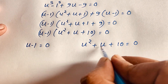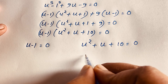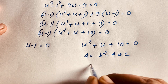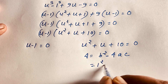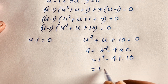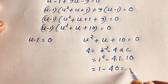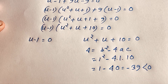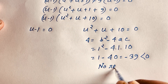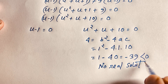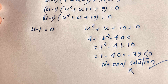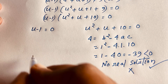For u² plus u plus 10 equals 0: a equals 1, b equals 1, c equals 10, so the discriminant is b² minus 4ac equals 1 minus 40 equals negative 39, which is less than zero. This gives complex (imaginary) solutions — no real solution — so we reject this case.